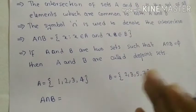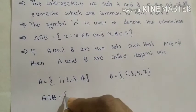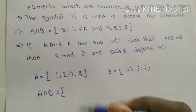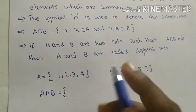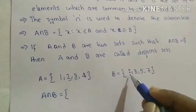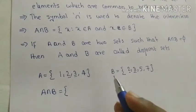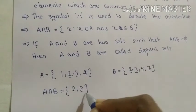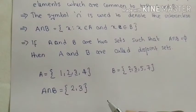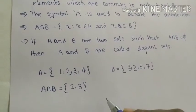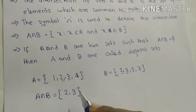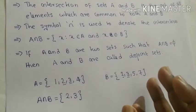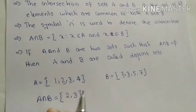We only need to check the elements which are common to both A and B. If the common elements exist, that is the answer of A intersection B. Looking at set A and set B, 2 and 3 are common in both sets. So the answer of A intersection B is the set containing the elements 2 and 3.